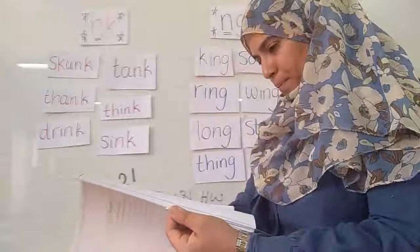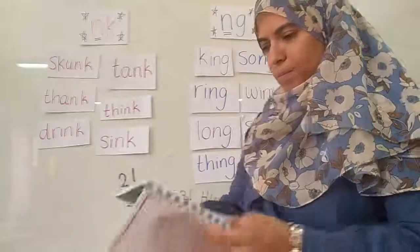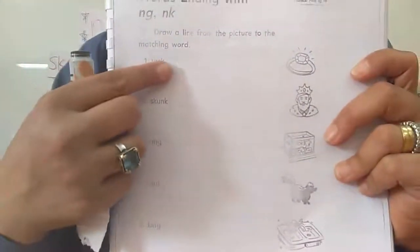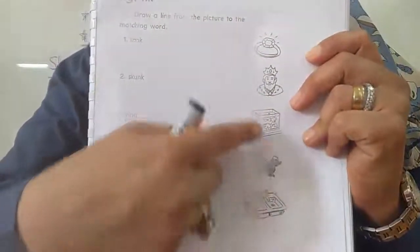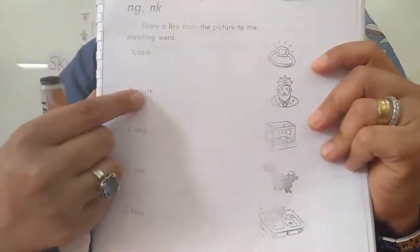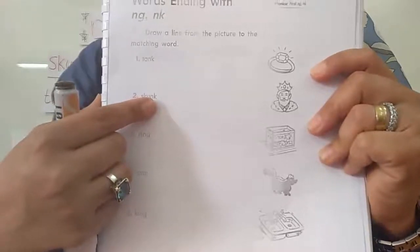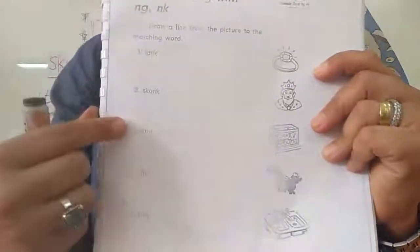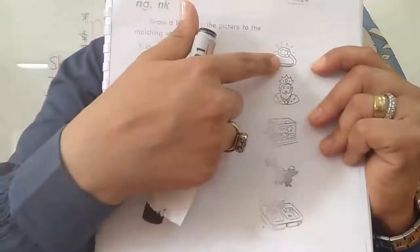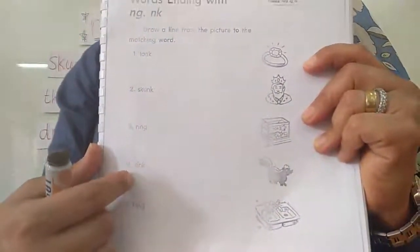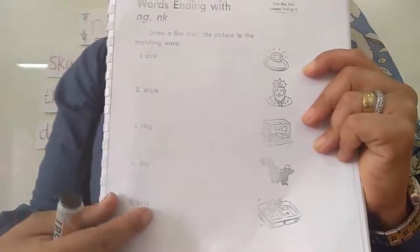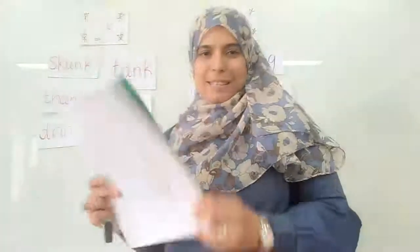Page 21 — I have here the words. The first one: tank. Where is the tank? Here's the tank. Number two: skunk. Where is the skunk? Number three: ring — the ring I wear in my fingers. Here is the ring. Number four: sink. Number five: king. Where is the king? It's easy — I told you you'd know how to do it.